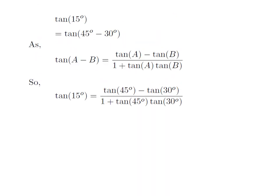To find tan of 15 degrees, we just have to replace tan of A with tan of 45 degrees and tan of B with tan of 30 degrees in the above formula.